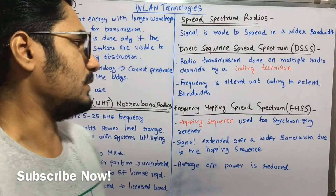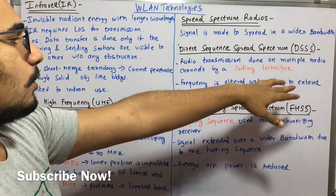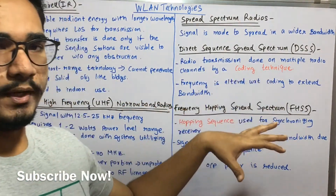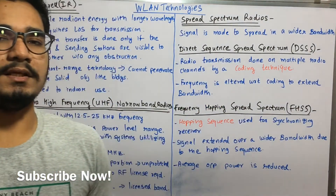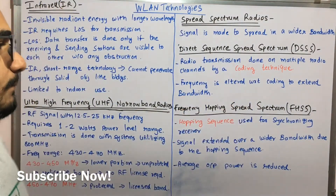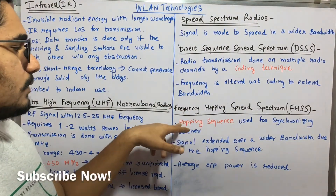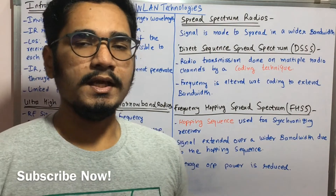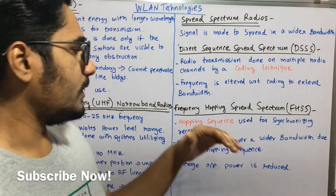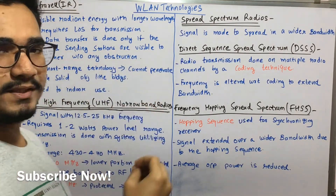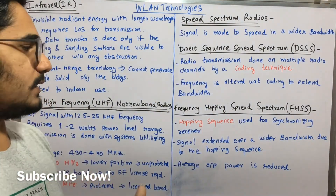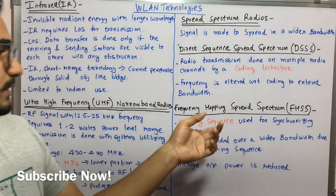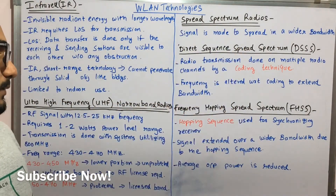In DSSS, multiple wavelengths are used to multiply the signals, and frequency is altered with respect to coding to extend and improve the bandwidth — multiplying with all incoming signals to achieve extended bandwidth. For Frequency Hopping Spread Spectrum (FHSS), a hopping sequence is used for synchronizing the receiver. Since FHSS setup is costly, synchronization between sender and receiver is important. The hopping sequence is input to the receiver to synchronize incoming signals, extending the signal over a wider bandwidth.